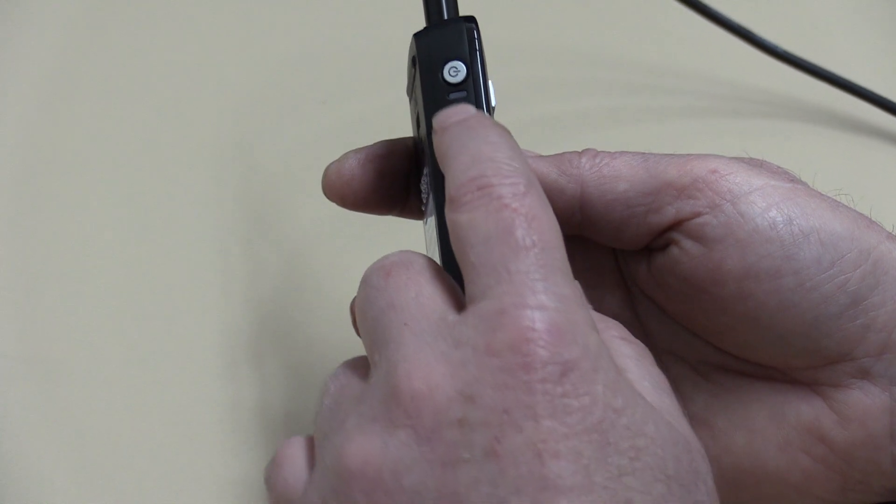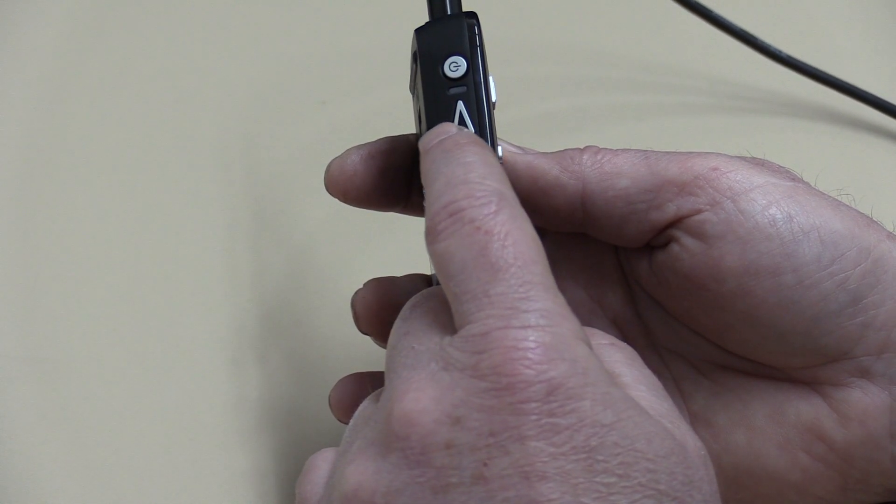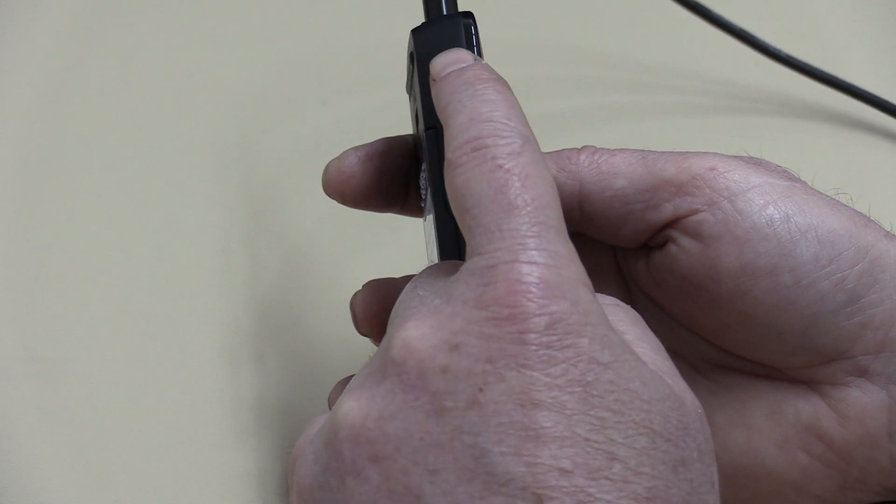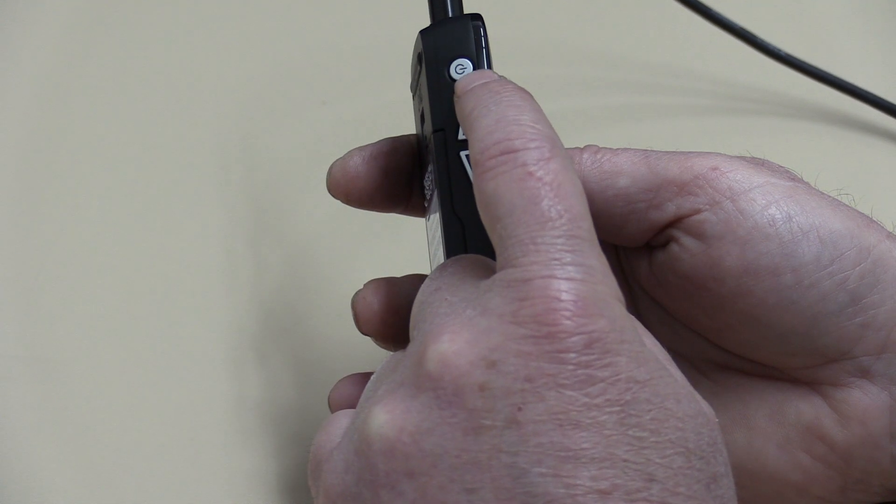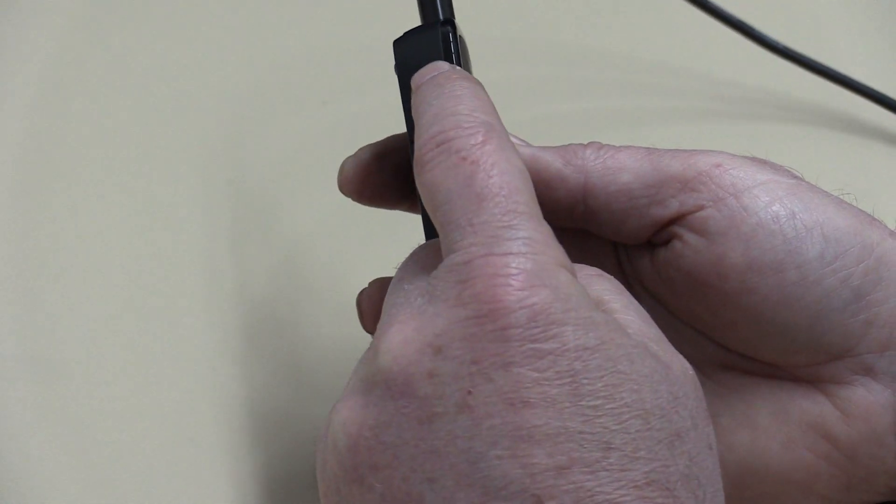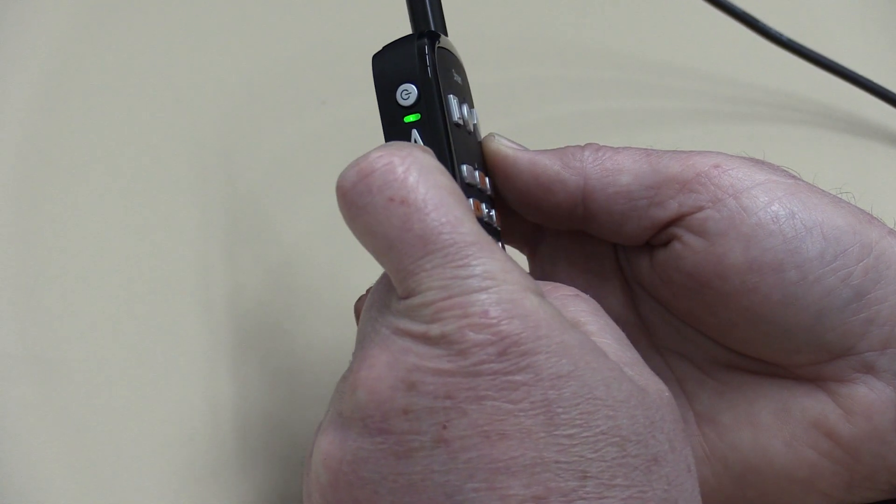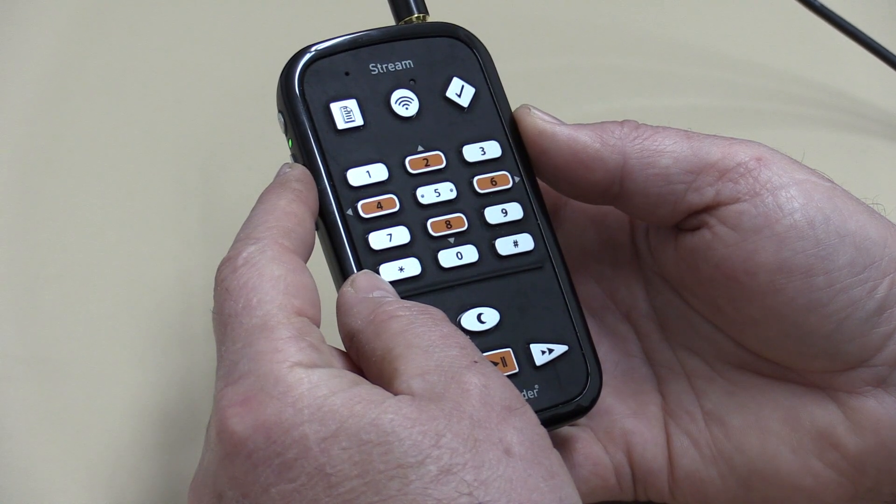But just here, what we're going to do is turn the Victor Reader on. You've got to hold the button in and you'll hear a beep, and once it's beeped then you let the button out. So I'm going to turn it on, I'm holding it in, there's the beep.